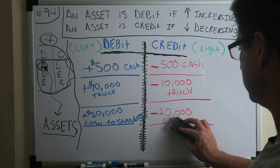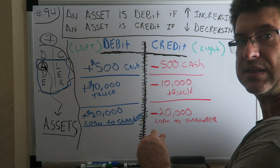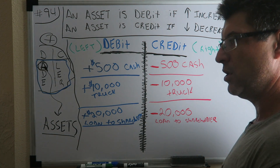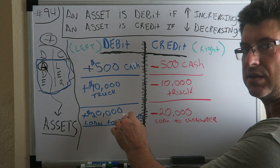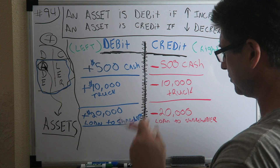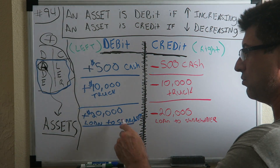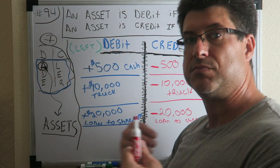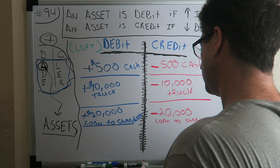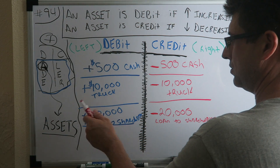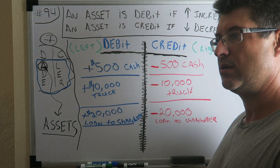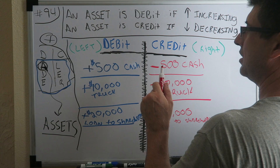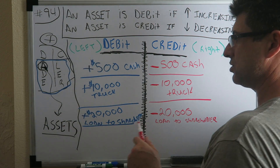The loan to shareholder is a non-current asset. When you loan money to someone, they owe it back — so it's money coming your way, which makes it an asset. If that account is increasing, you debit it. If the person paid you back the $20,000, that's a decrease in the loan to shareholder account. Since it's an asset account decreasing, it's going to be a credit.